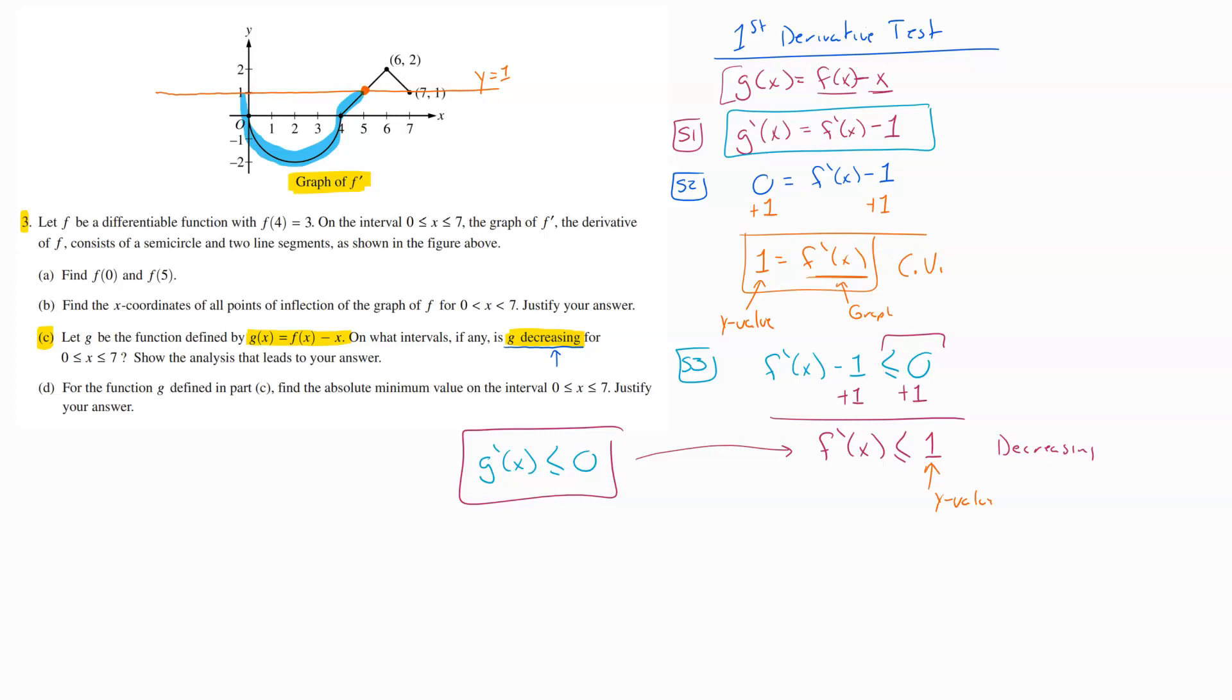When would that be happening? It would be happening starting here and ending at our critical value of five. So our conclusion on this would be that this is going to be decreasing on the interval from zero that is less than or equal to X is less than or equal to five. That is the interval where this is decreasing.